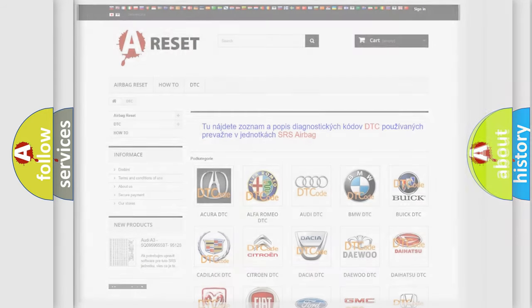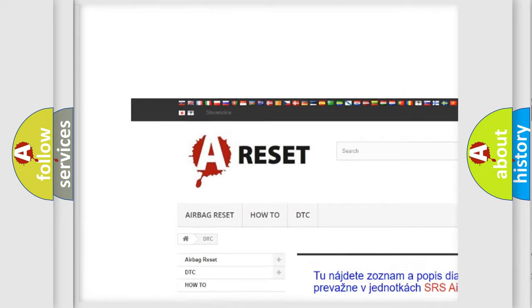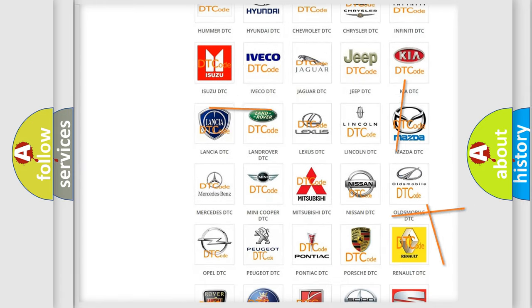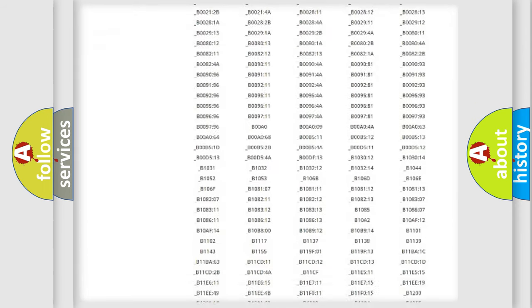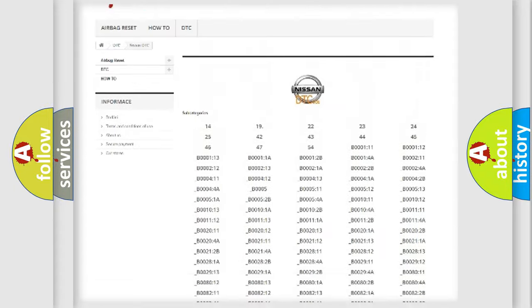Our website airbagreset.sk produces useful videos for you. You do not have to go through the OBD2 protocol anymore to know how to troubleshoot any car breakdown. You will find all the diagnostic codes that can be diagnosed in Nissan vehicles.